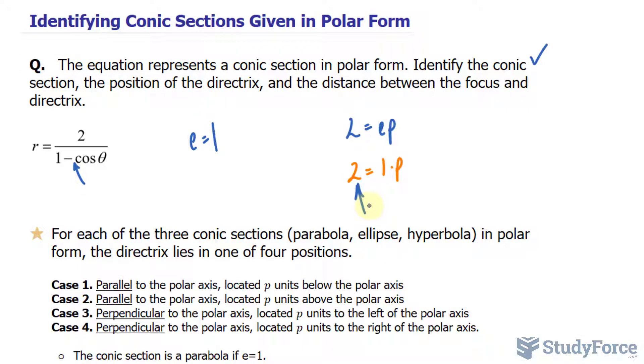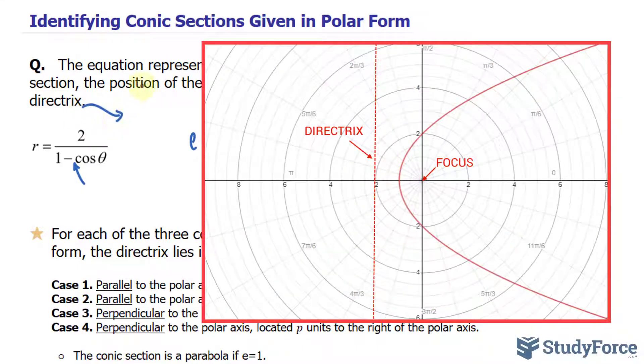And the distance between the focus and the directrix is next. Because the focus lies directly on the polar axis, this means that p also represents the distance between the focus and the directrix. Therefore, to answer this part, it is equal to two. A graph of the equation is now shown on your screen.